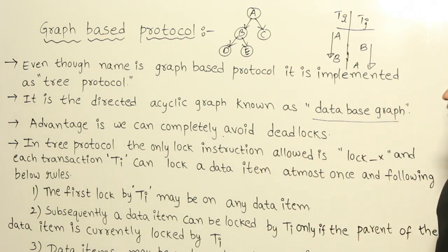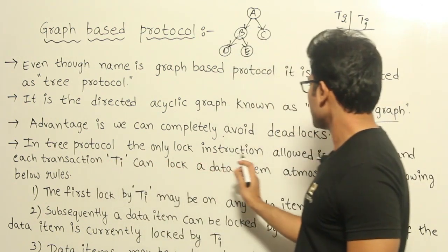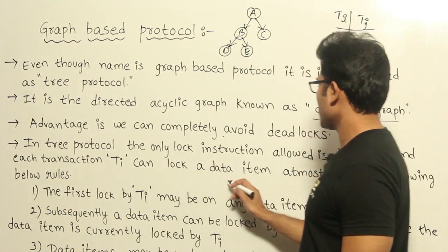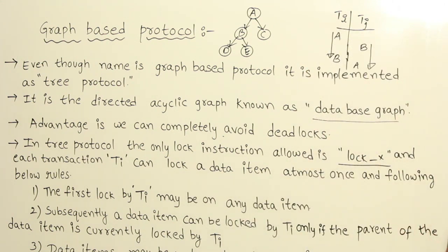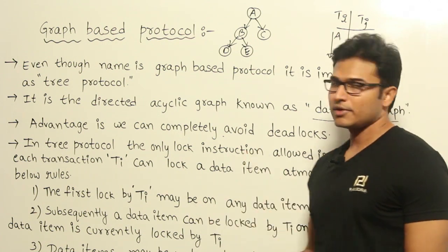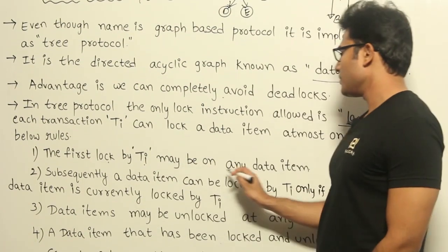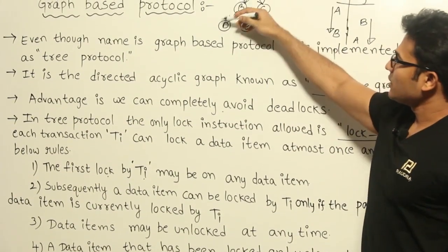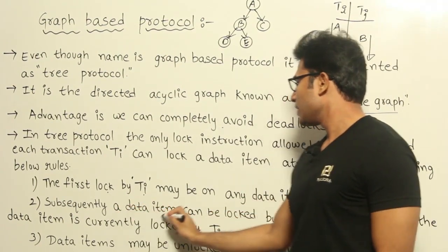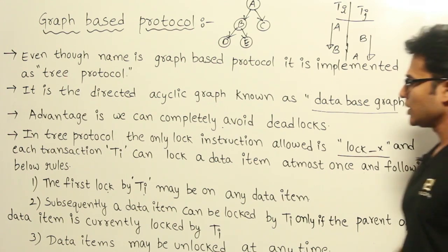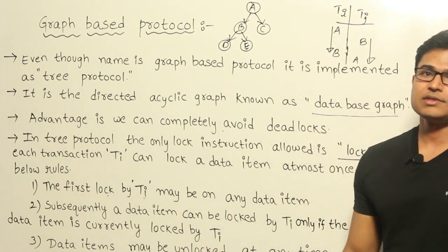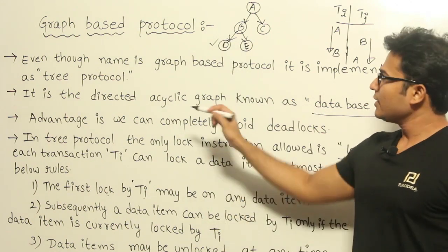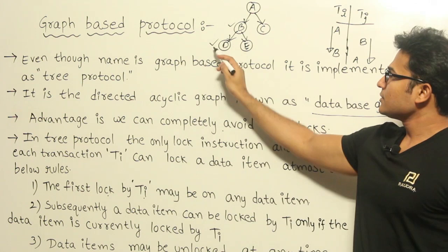The advantage is we can completely avoid deadlocks. In the tree protocol, the only lock instruction allowed is an exclusive lock. Each transaction Ti can lock a data item at most once. The first lock by Ti may be on any data item — the root, or B, C, D, anywhere. But subsequently, a data item can only be locked by Ti if its parent is currently locked by Ti.